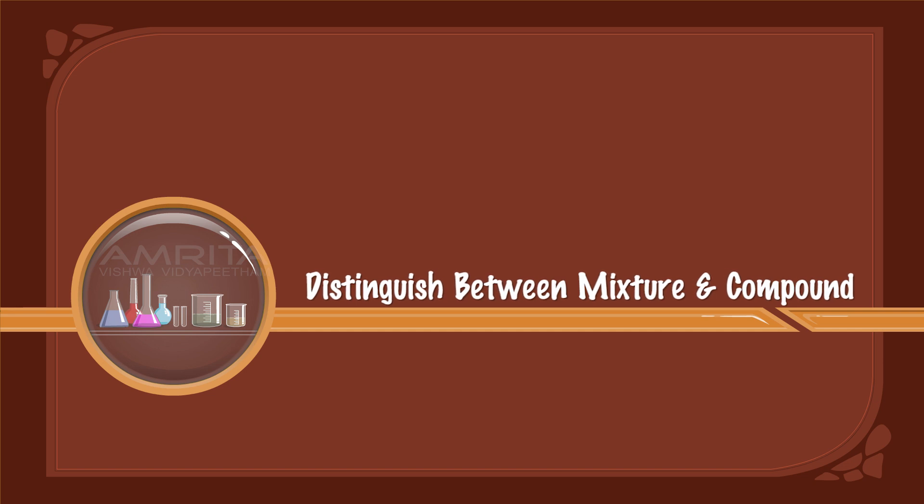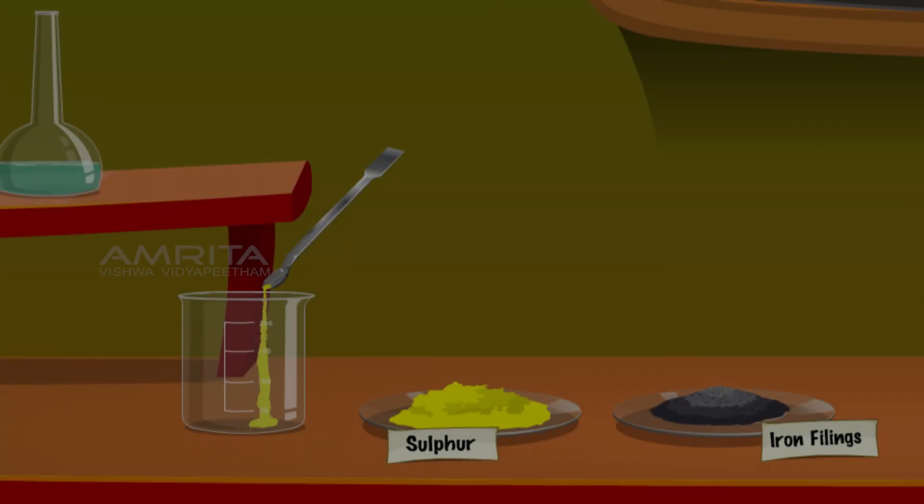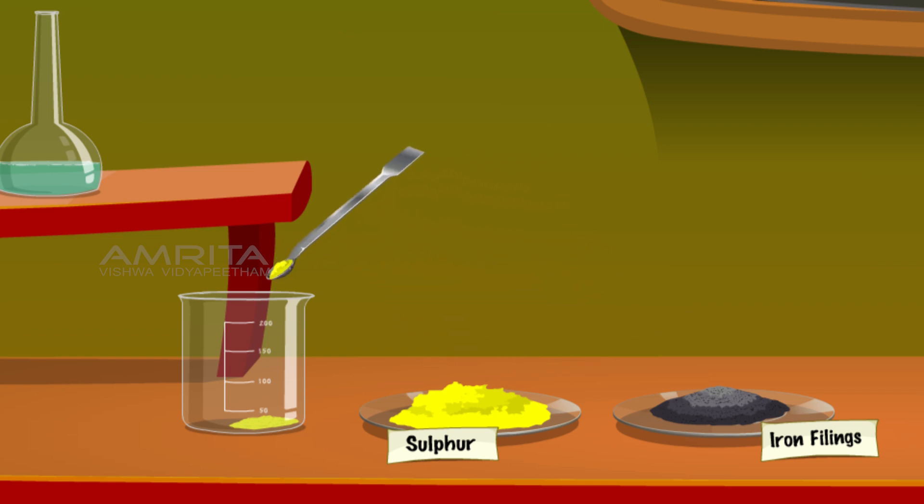Distinguish between Mixture and Compound. Using a spatula, take a small quantity of sulphur powder and transfer it into a beaker. Add a small quantity of iron fillings.